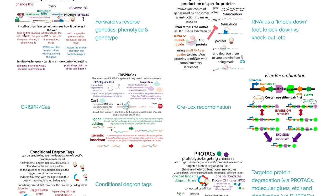A genetic knockout is where you make it so a gene can't be used and the protein is never made. When we're talking about CRISPR, we're dealing at the gene level — the DNA — so these changes are permanent, and every cell descending from that modified cell will be mutated. If we just want to do things temporarily, instead of targeting the DNA we can target the messenger RNA copies.